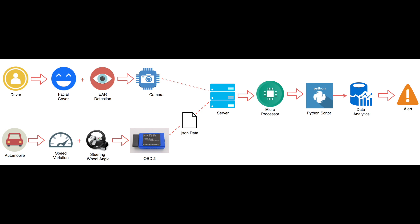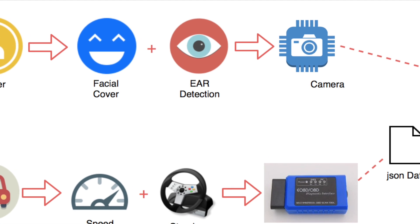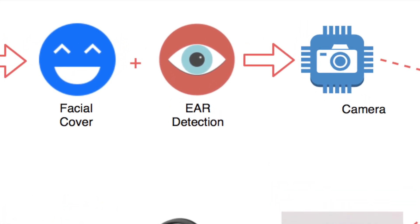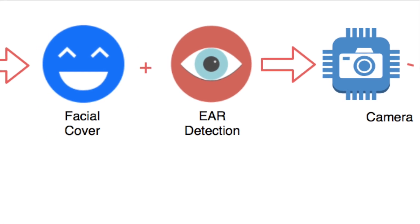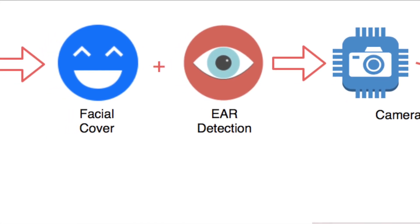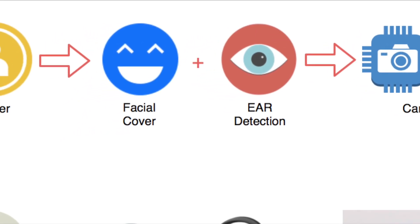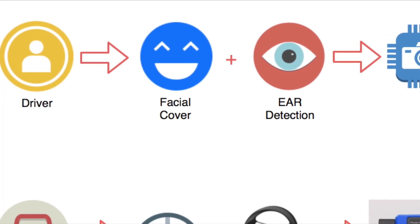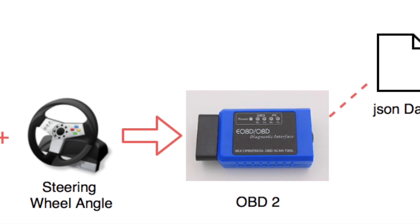Once the camera is mounted, our algorithm runs and predicts the EAR value. EAR stands for Eye Aspect Ratio, which helps in understanding the eyes — specifically whether the driver is going drowsy or not. This is one of the very important parameters we use to determine if the driver is about to be drowsy or is active.